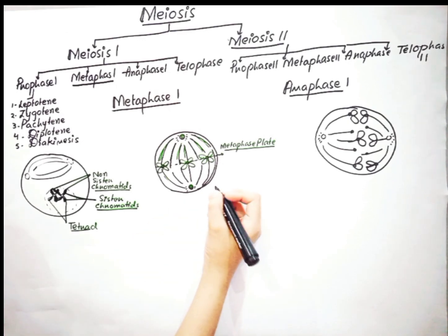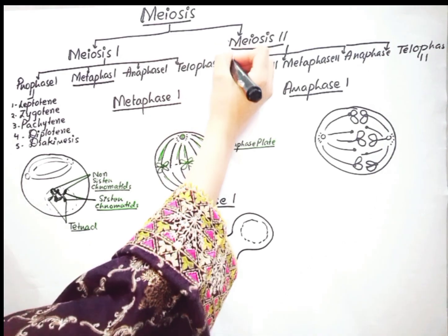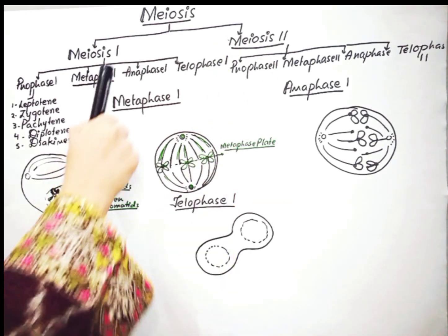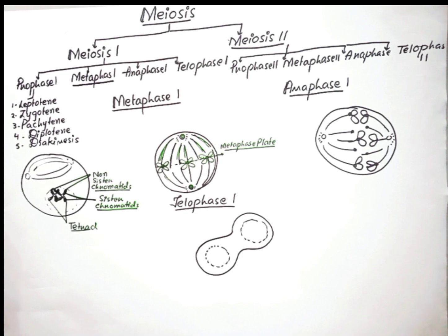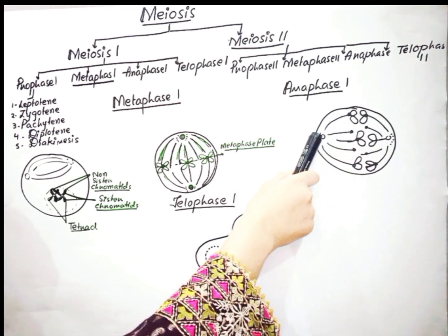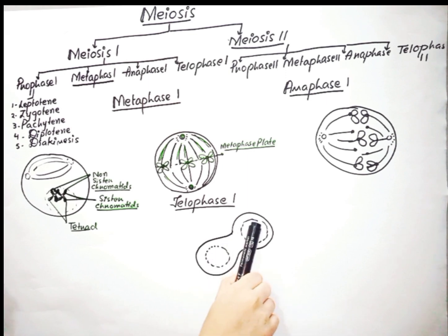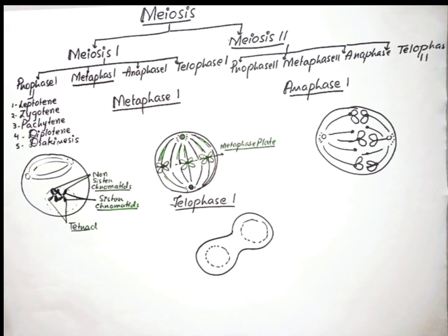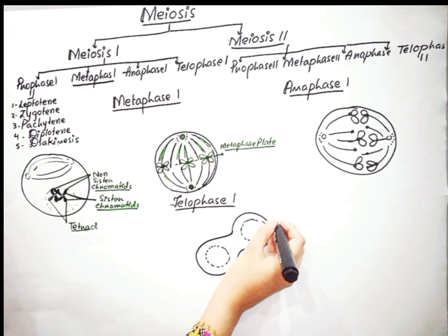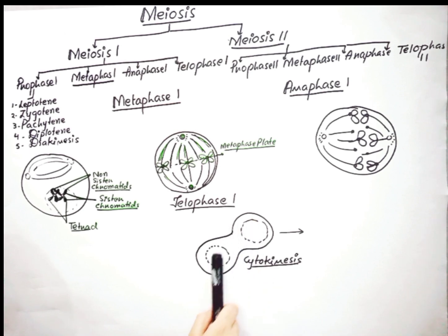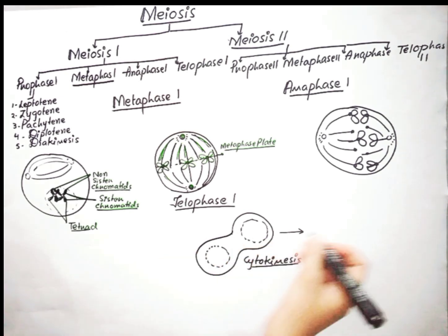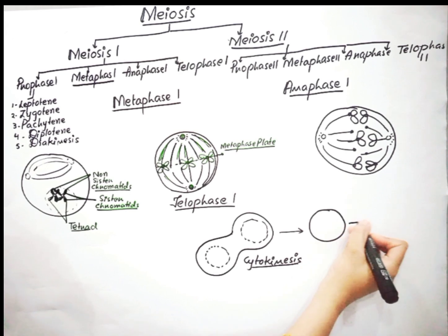And lastly, we have telophase 1, which is the last stage of meiosis 1. During this sub-stage, the chromosomes have finished moving to opposite poles. The homologous chromosomes separate into their separate nuclei, and the cell reforms its nuclear envelope. The spindle fibers now disappear, two separate nuclei form, and the cytoplasm division takes place, resulting in two cells.